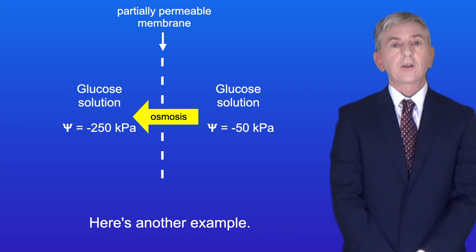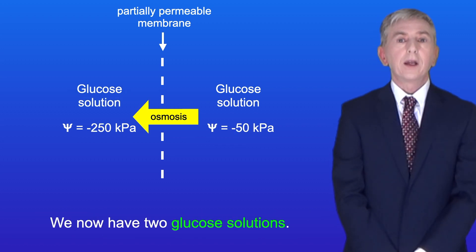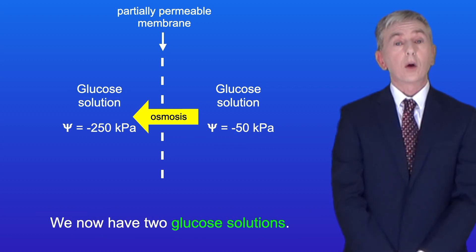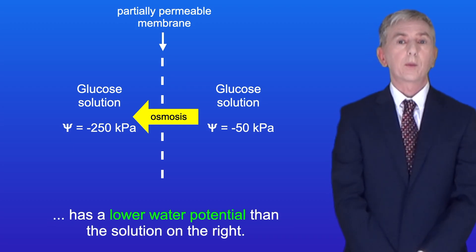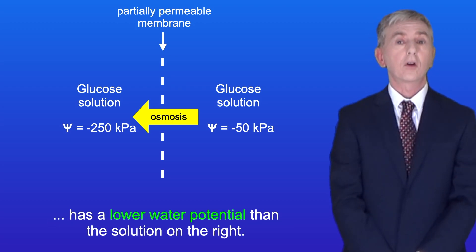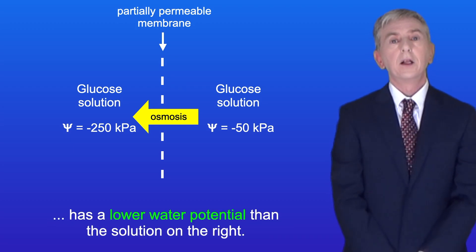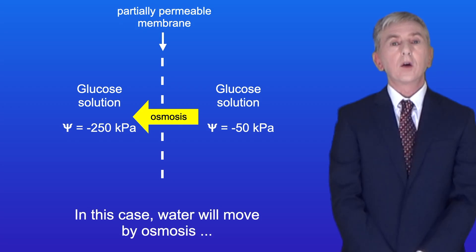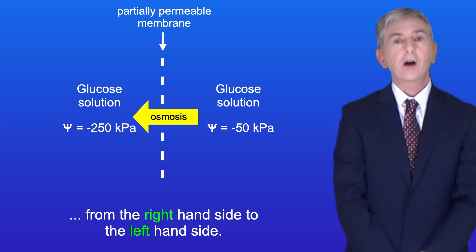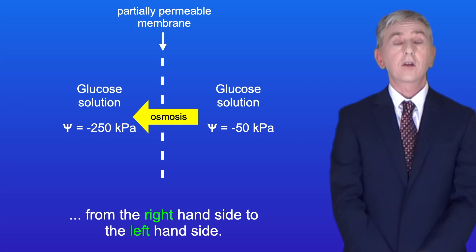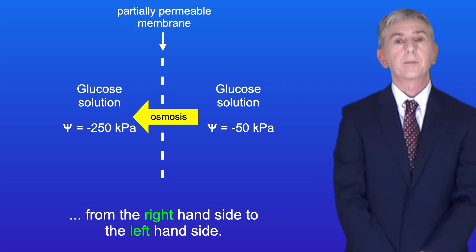Here's another example. We now have two glucose solutions. In this case, the solution on the left has a lower water potential than the solution on the right. So in this case, water will move by osmosis from the right-hand side to the left-hand side.